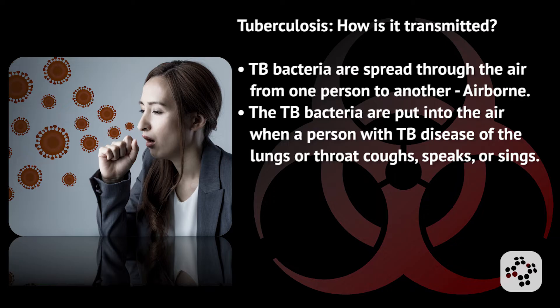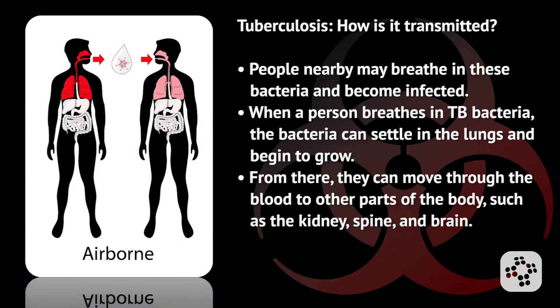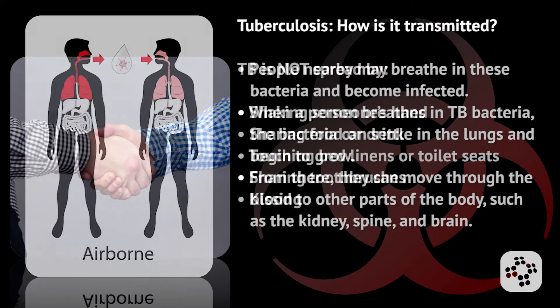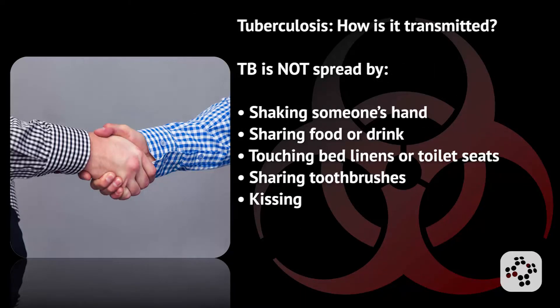How is tuberculosis transmitted? TB bacteria are spread through the air from one person to another — this is called airborne transmission. The TB bacteria are put into the air when a person with TB disease of the lungs or throat coughs, speaks, or sings. People nearby may breathe in these bacteria and become infected. When a person breathes in TB bacteria, the bacteria can settle into the lungs and begin to grow, and from there they can move through the blood to other parts of the body such as the kidneys, spine, and brain.